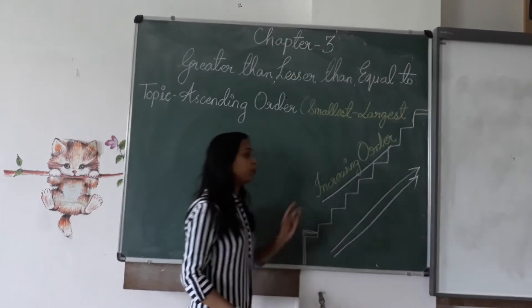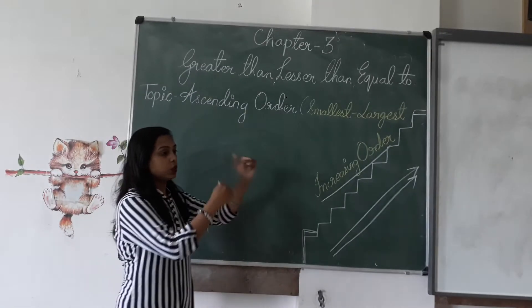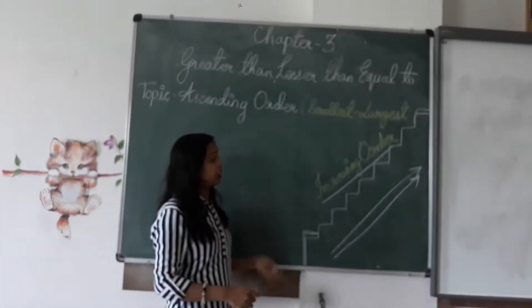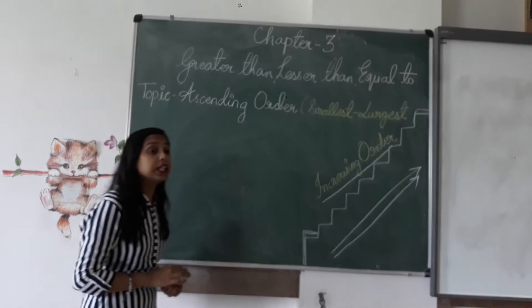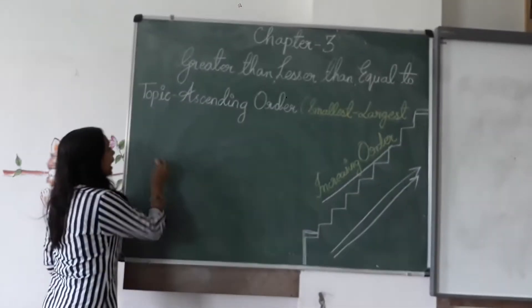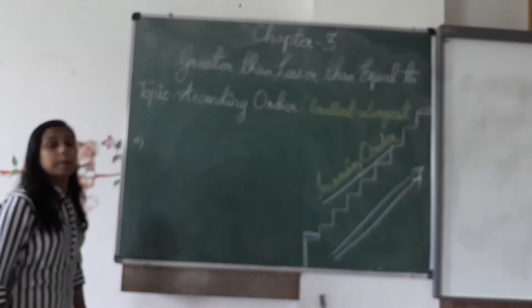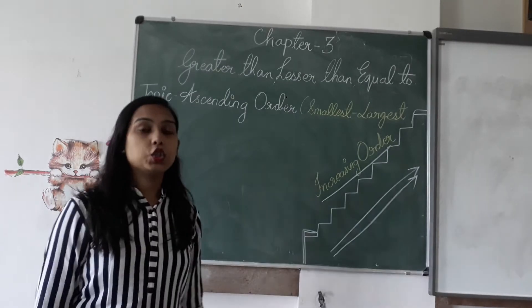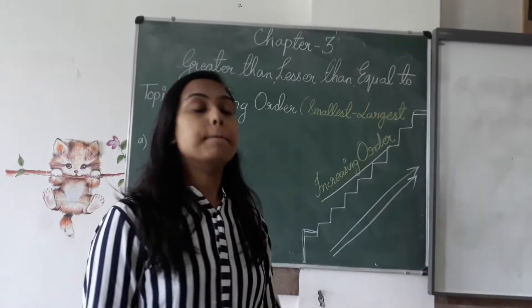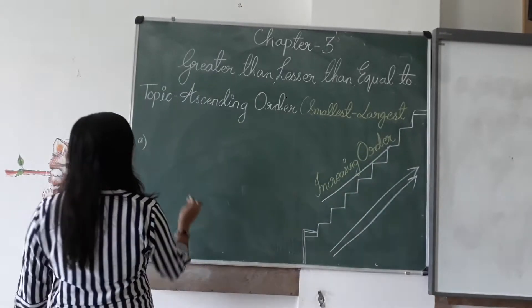Increasing means going upward — chote, chote steps and then reaching the top. Now take an example. I think you have understood the meaning of ascending order — chote se bada. Now I am writing some numbers here.